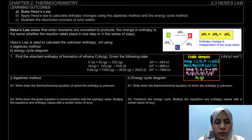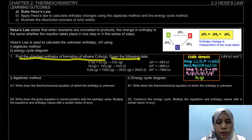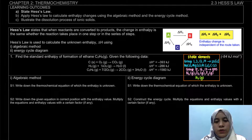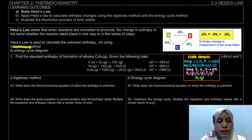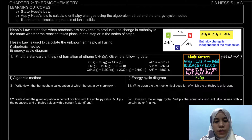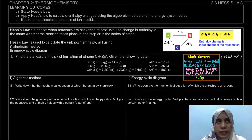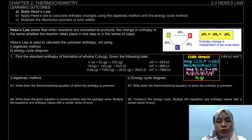Let's look at question number one: find the standard enthalpy of formation of ethane given the following data. We're going to apply Hess's Law using both the algebraic method and the energy cycle diagram. First, we must write down the equation. Standard enthalpy of formation of ethane means one mole of product — C2H6 gas — is formed from its most stable elements.